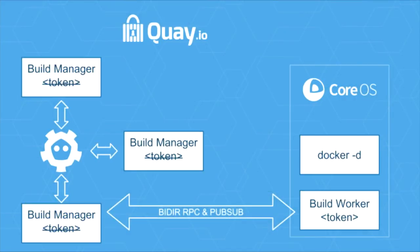Once the token is exchanged, we invalidate it in etcd so that there can be no replay attacks — no new machine can intercept that token and try to get another build manager to give it work. Once the token has been exchanged, we establish a bidirectional RPC and PubSub channel to send commands back and forth between the worker and the manager, and to stream out information happening during the actual build. With that, I'd like to transition over to Joey, software engineer on Quay, who will tell us more about how the actual build happens.